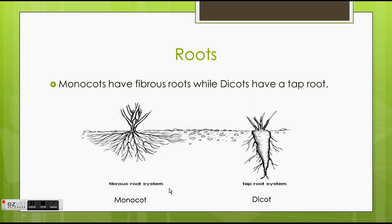Roots: monocots have fibrous roots, while dicots have a tap root. On the left example, we see a monocot with a fibrous root system, as it's very fine and spreads out diversely. On the right, we see the tap root system, which consists of a larger, thicker main root, with smaller roots coming off of it.